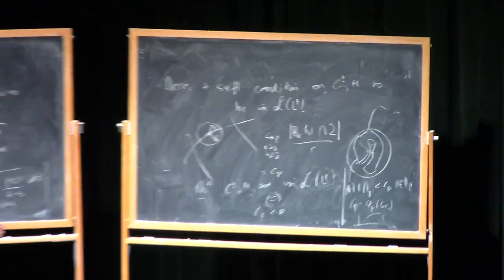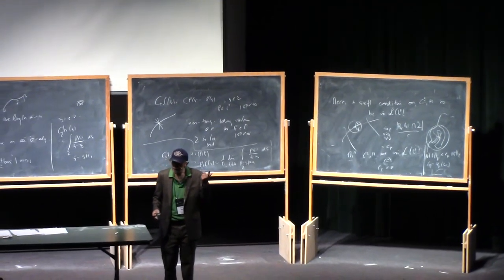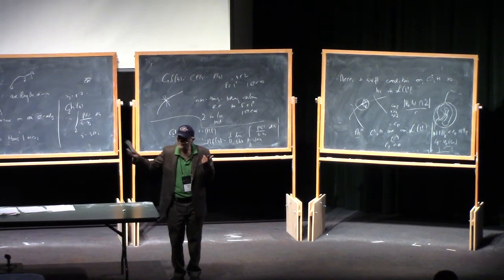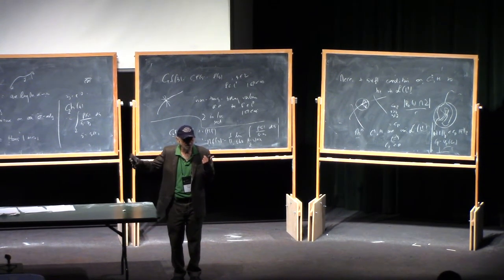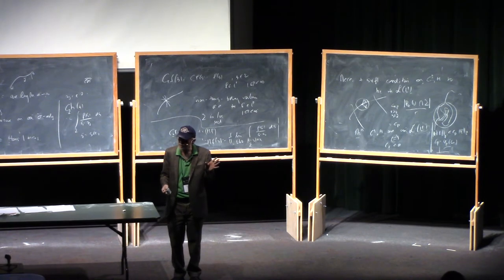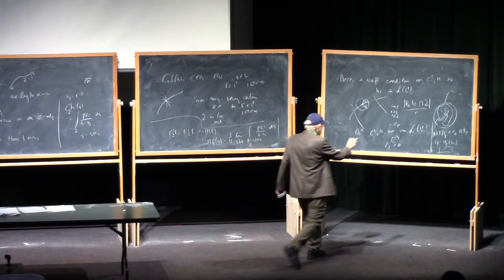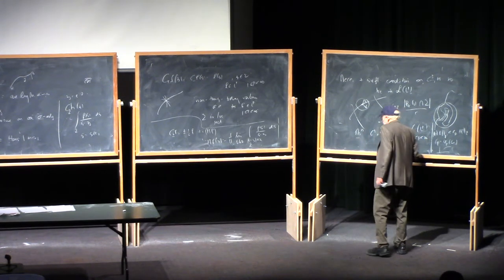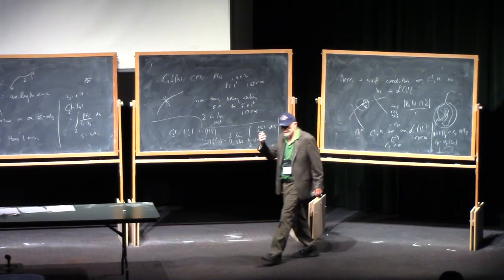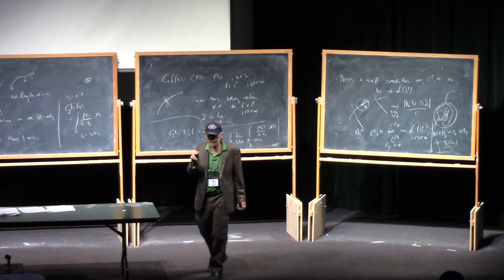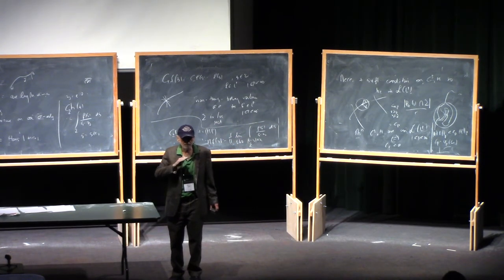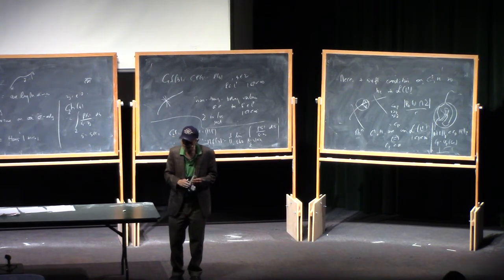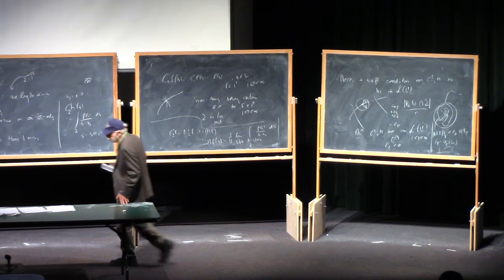The theorem is this. If C gamma is finite, then the operator H, for example, is bounded in L2. And then by some kind of method, we saw interpolation and things like this, you know it's going to be true for all LP bigger than one. Conversely, if the Hilbert transform is bounded in L2 or in any fixed LP, it's bounded in all LP bigger than one and C gamma is finite.